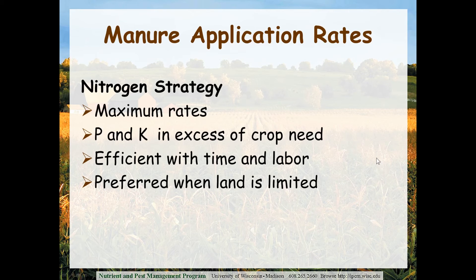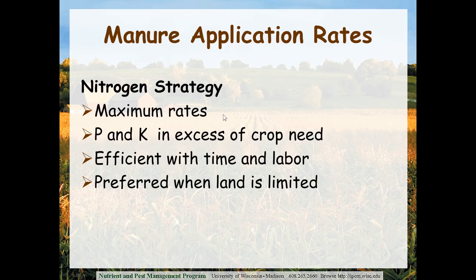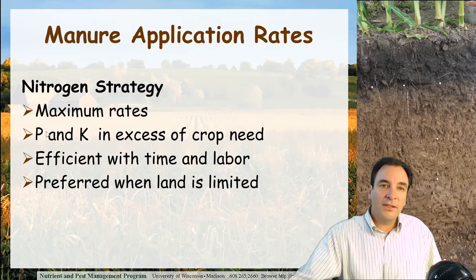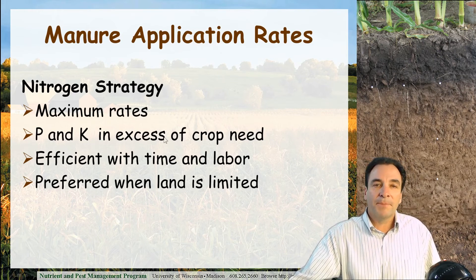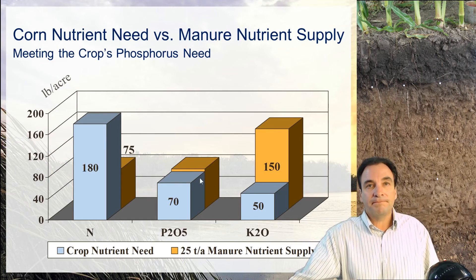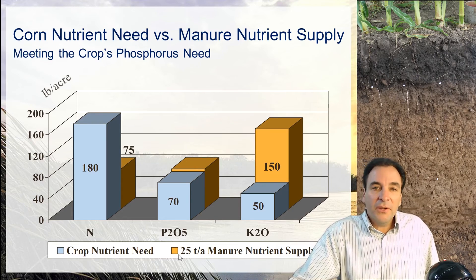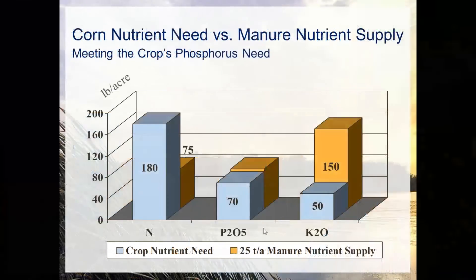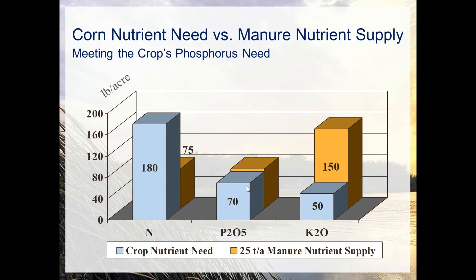This nitrogen application strategy is preferred by most producers because it allows less time on the tractor, applying more manure to fewer acres at higher rates — it's efficient in time and labor and preferred when land resources for spreading are limited. Following a phosphorus-based strategy instead, we lower the manure application rate to match crop phosphorus removal. We hit the phosphorus level but under-apply nitrogen, meaning we must go back out with supplemental nitrogen fertilizer.